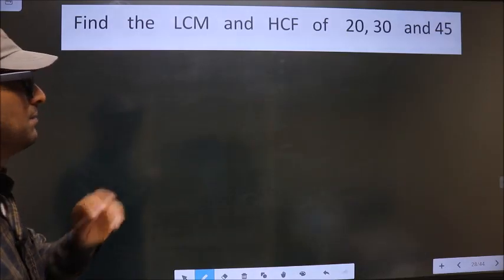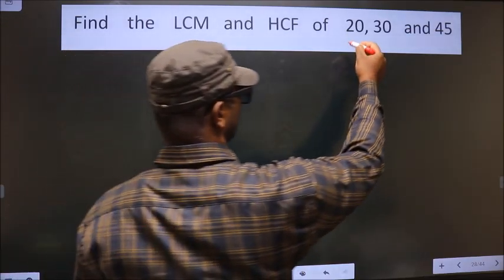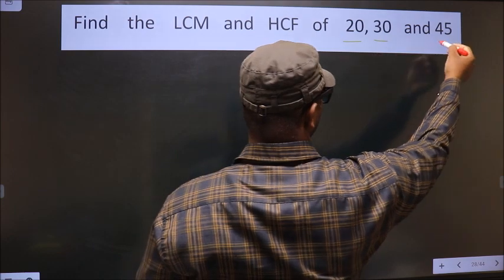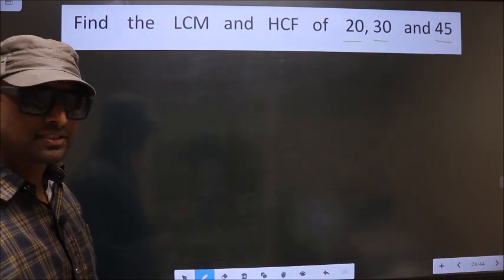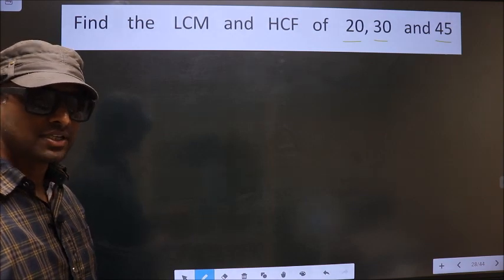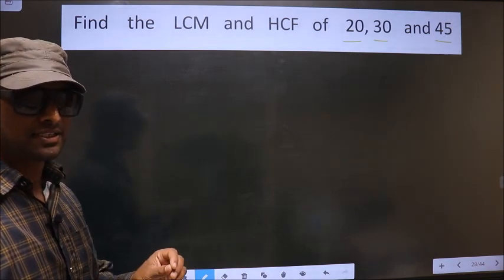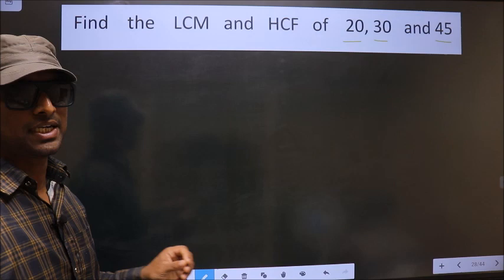Find the LCM and HCF of 20, 30 and 45. To find the HCF and LCM, first we should do the prime factorization of each number separately.